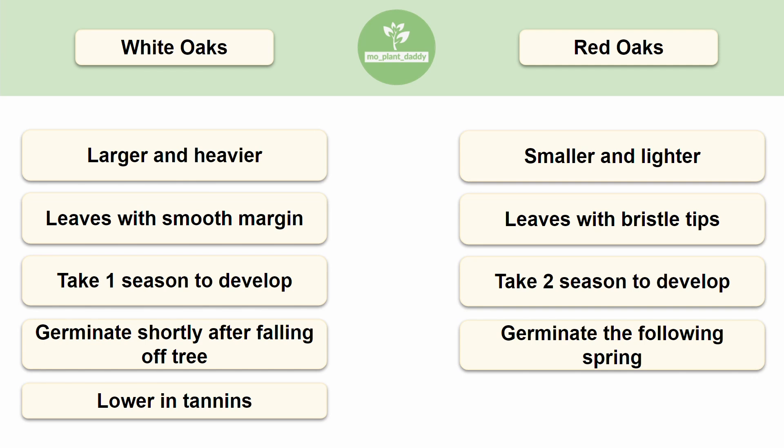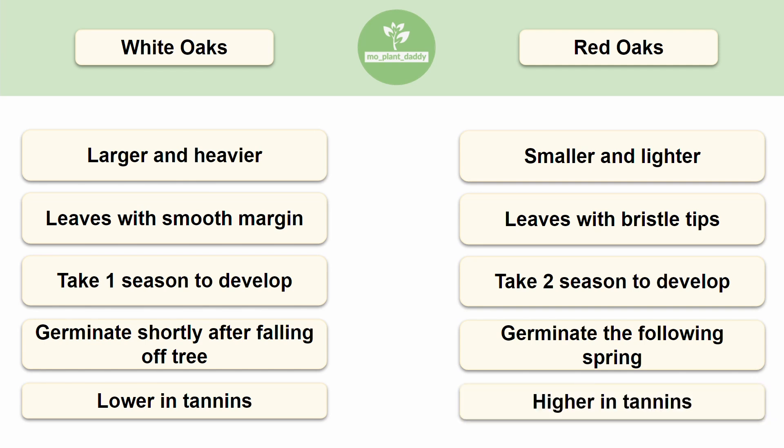Red oaks may be higher in tannins, but they're also higher in protein, fiber, fat, and calories — but that may not make up for the fact that they're harder to digest and don't taste as good.